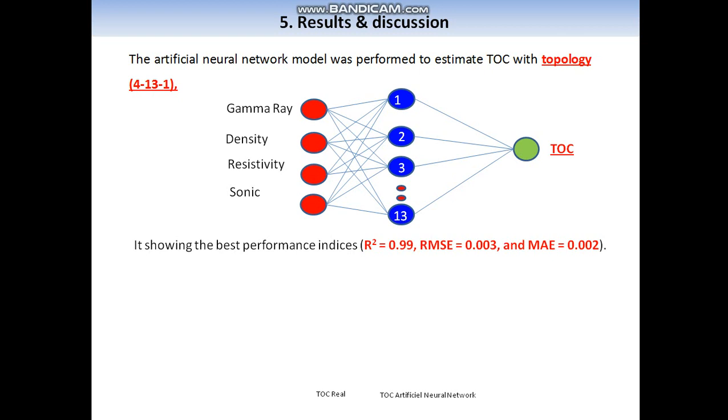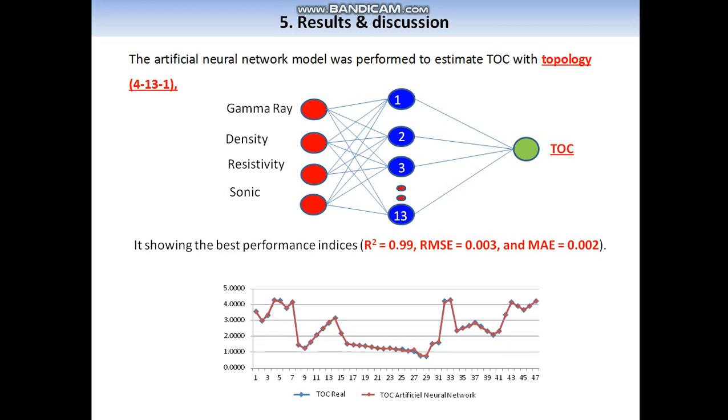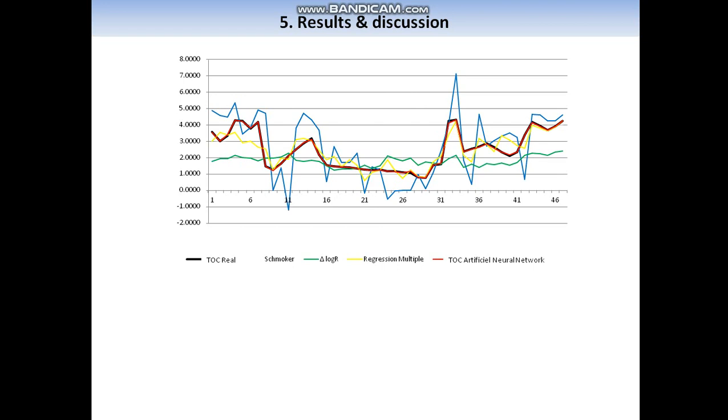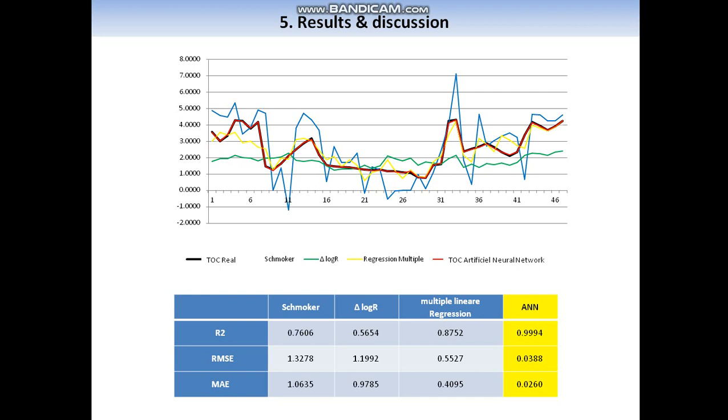It shows the best performance indices: coefficient of determination, root mean square error, and mean absolute error. For graphical representation, it represents a high superposition with TOC-real and the TOC-predicted with artificial neural network model. For more comparison with other methods, like empirical method Schmoker and delta log R, and statistical regression multiple, it shows that the ANN has the best performance.